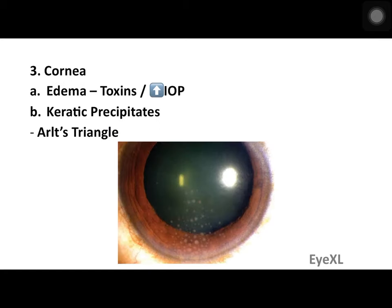On the cornea, the first thing you could notice is corneal edema — a steamy appearance. This could be due to release of toxins by microorganisms in an infective case, or due to an increase in intraocular pressure via multiple mechanisms. Raised intraocular pressure decompensates the endothelial pump mechanism, causing sudden onset edema.